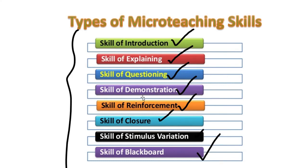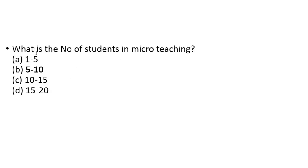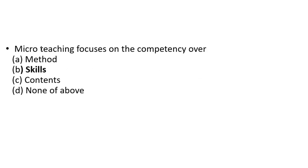Types of micro teaching skills: Skill of Introduction, Skill of Explaining, Skill of Questioning, Skill of Demonstration, Skill of Reinforcement, Closure, Skill of Stimulus Variation, and Skill of Blackboard. Duration of lessons in a macro lesson plan is 35 to 45 minutes. Number of students in micro teaching is 5 to 10. Micro teaching focuses on the competency over skill.